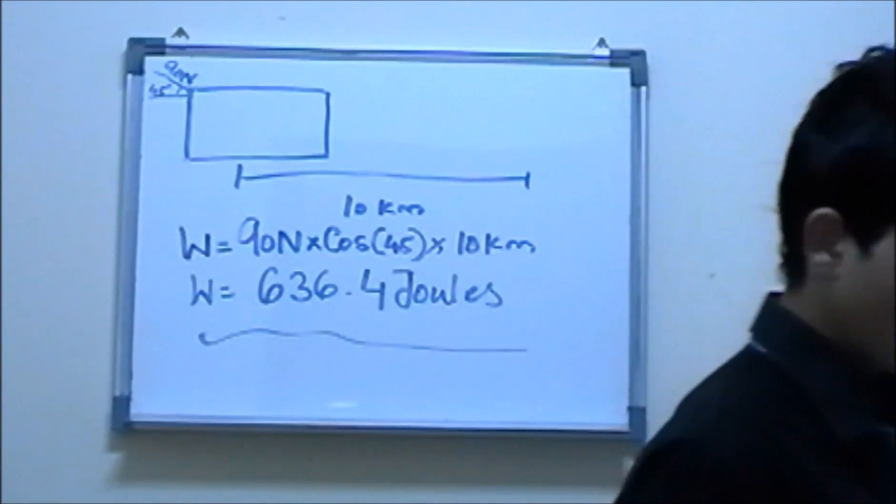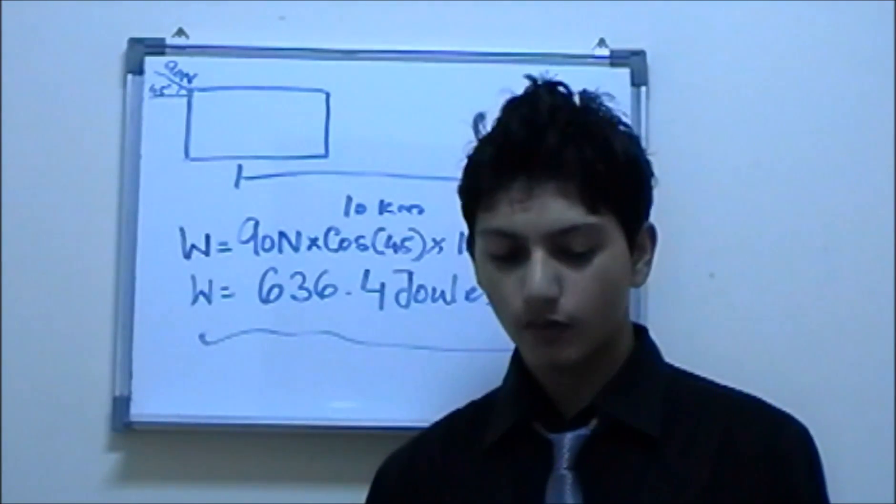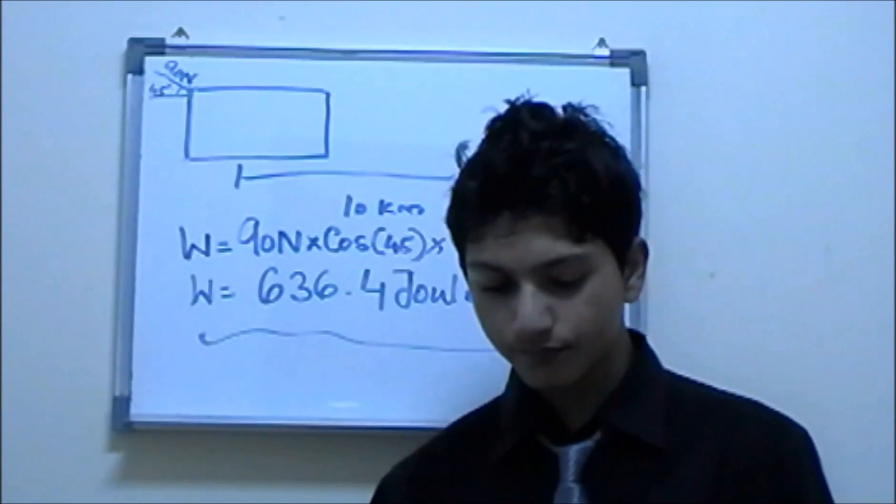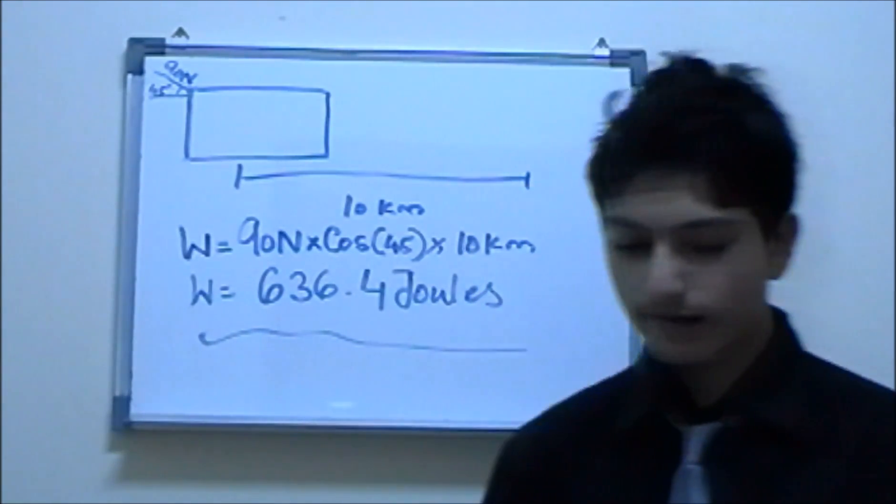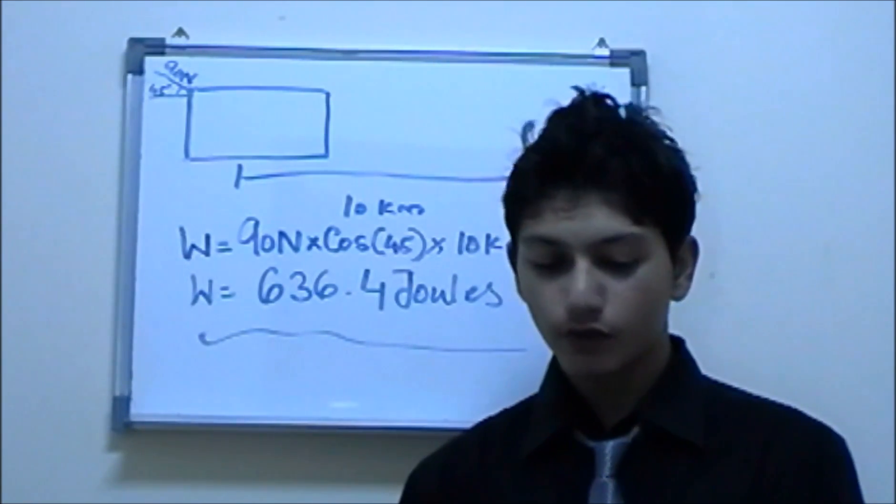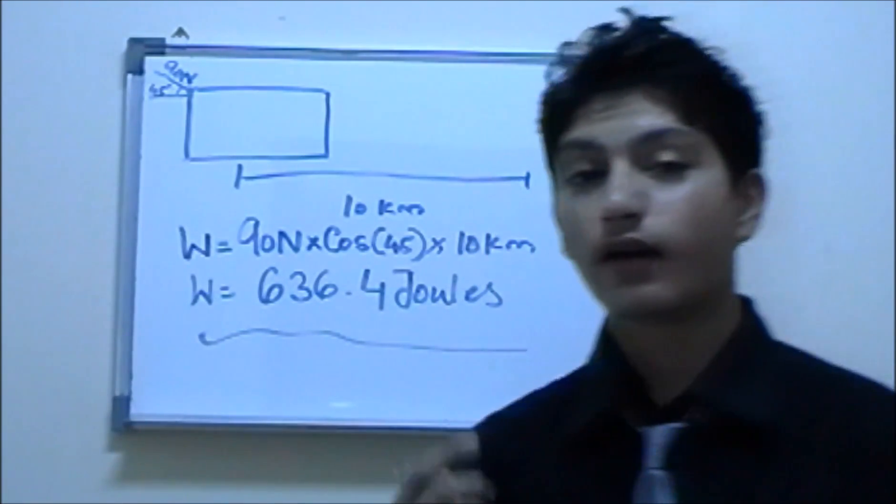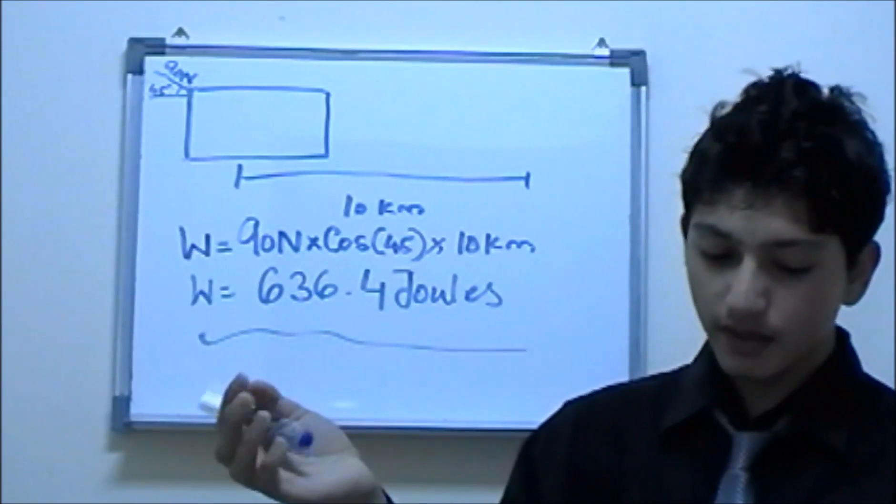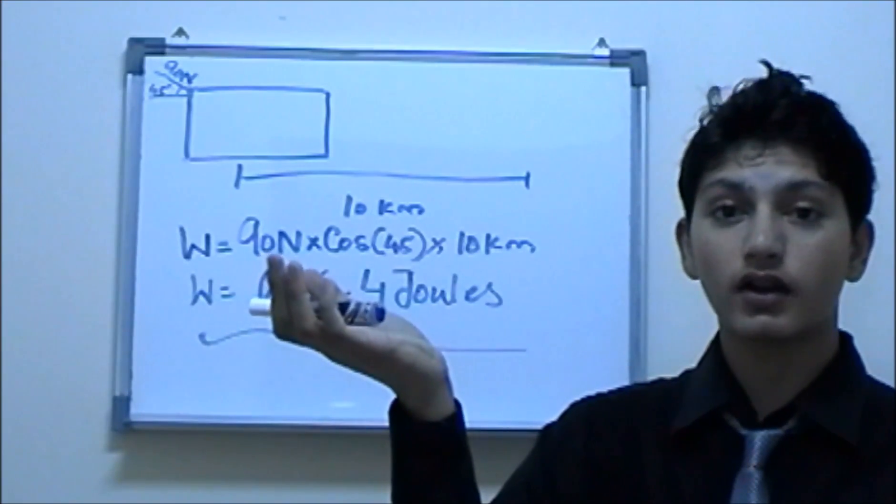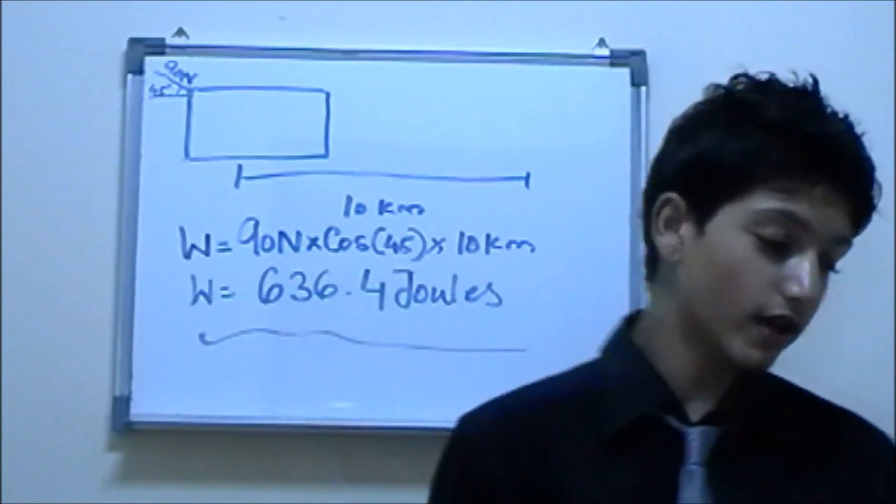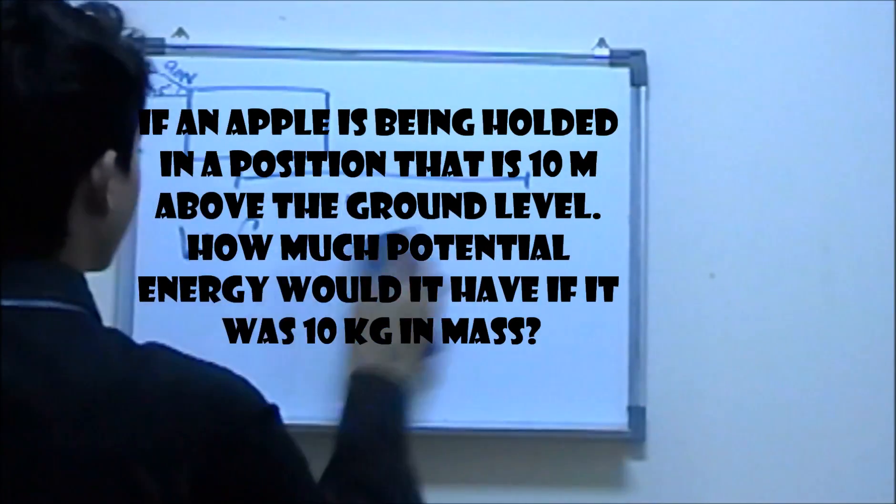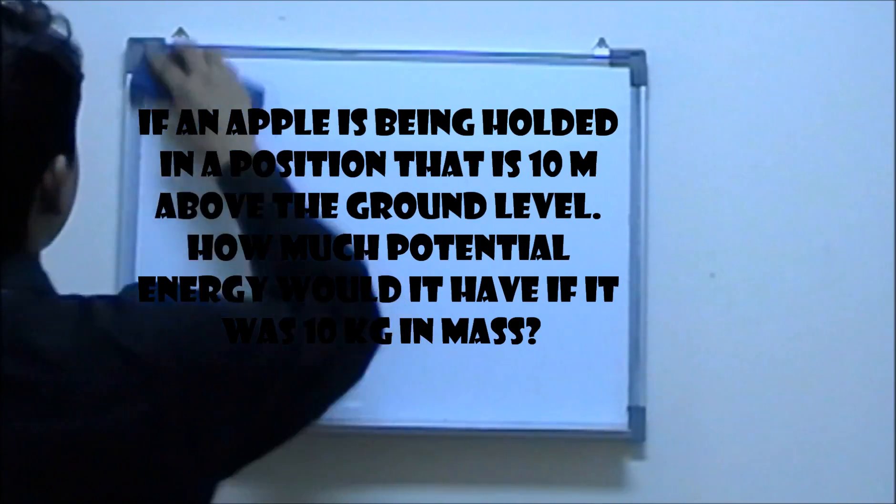Now going to gravitational potential energy. The question goes like this: if an apple is being held in a position which is 10 meters above the ground level, how much potential energy would it have if it was 10 kg in mass? This is an apple being held up 10 meters above the ground, and this weighs 10 kg. Now how are we going to calculate that?